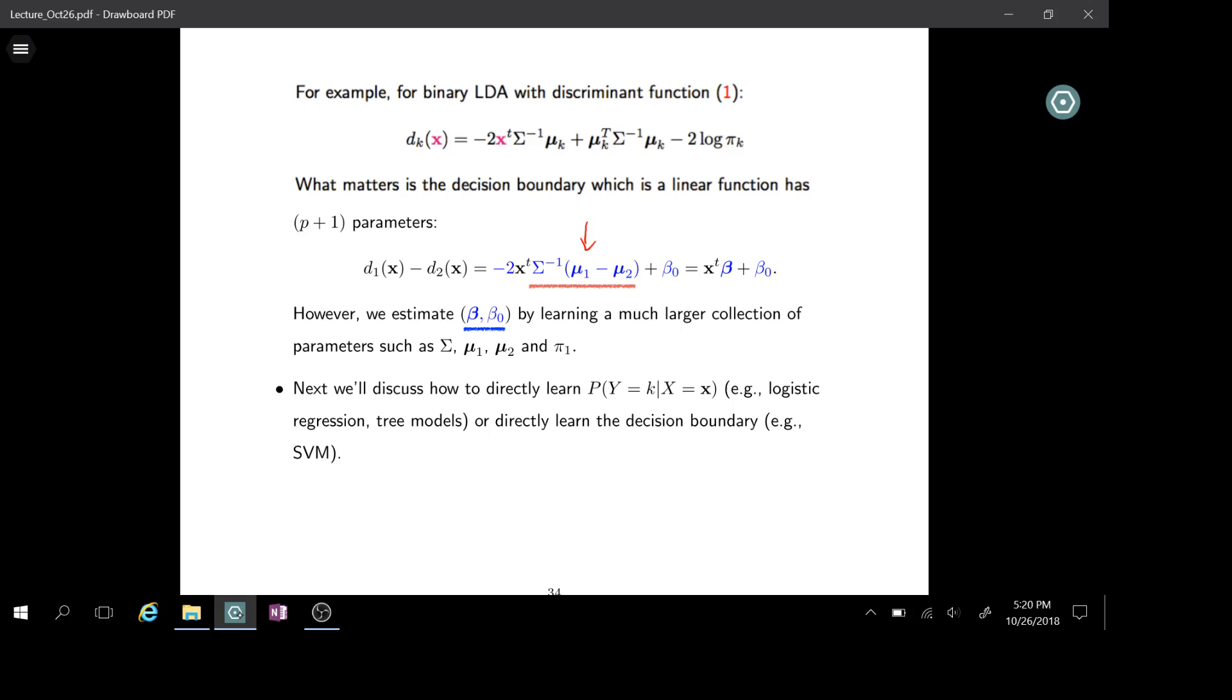For example, next week we'll talk about logistic regression or tree model, SVM. Those are the algorithms. They just directly learn this conditional probability of y given x, instead of learning the joint from different pieces and then get the conditional from the joint.